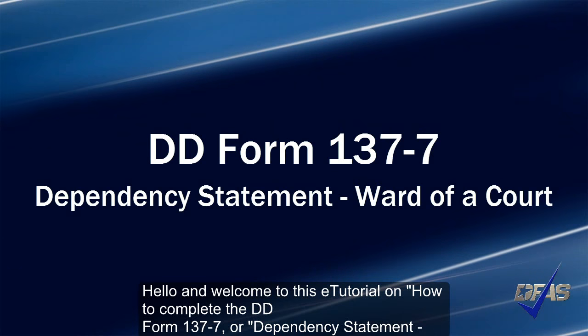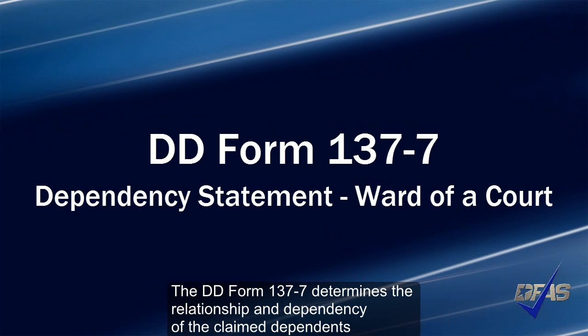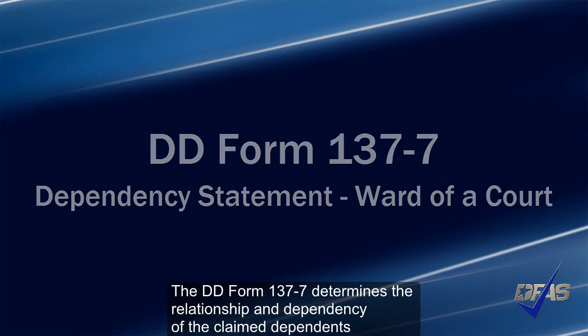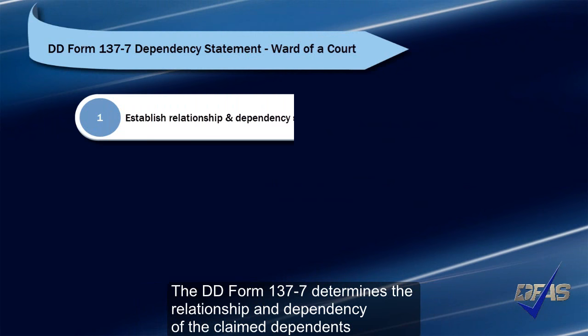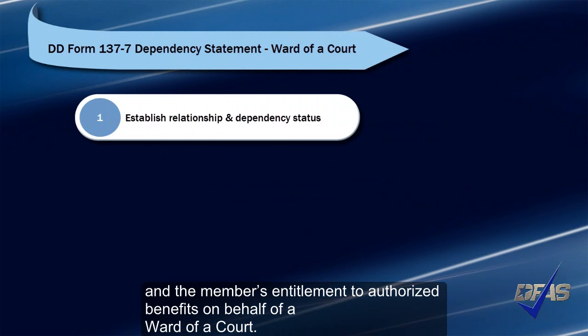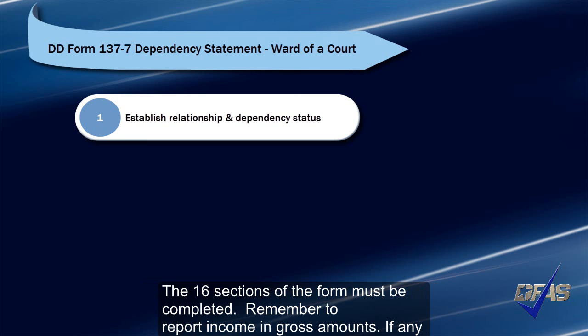Hello, and welcome to this e-tutorial on how to complete the DD Form 137-7, or Dependency Statement, Ward of Court form. The DD Form 137-7 determines the relationship and dependency of the claimed dependents and the member's entitlement to authorize benefits on behalf of a ward of a court.